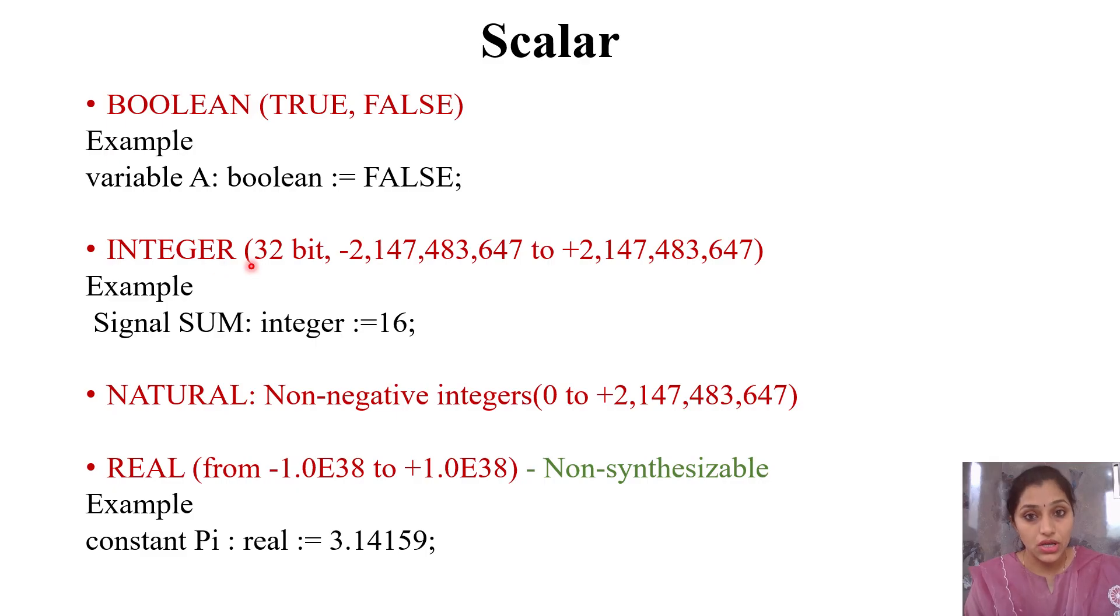VHDL supports 32-bit integer, ranging from negative 2^31 to 2^31 minus 1. For example, signal sum is of type integer and can have any value from this range. I've assigned an initial value of 16. Natural is also an integer type, but contains only non-negative integers, ranging from 0 to 2^31.